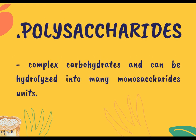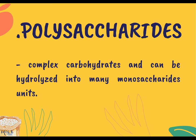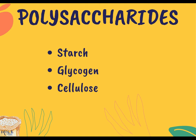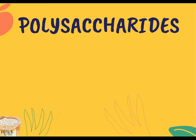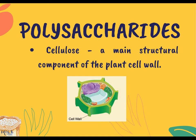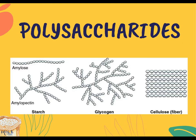The next classification of carbohydrates is polysaccharides. Polysaccharides is a complex carbohydrate and can be hydrolyzed into many monosaccharide units. There are three most important polysaccharides. First is starch — the storage form of carbohydrates in plants and the most important source of carbohydrates in human nutrition. Another kind is glycogen, called animal starch. It is a macromolecule found in animal and human liver and muscle. The last example is cellulose, the main structural component of plant cell walls. The cell wall is composed of bunches of sugar molecules, which are so durable that they give plants their shape and strength. These are the structural organizations of polysaccharides: starch, glycogen, and cellulose.